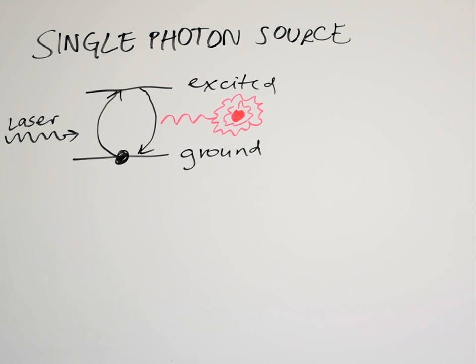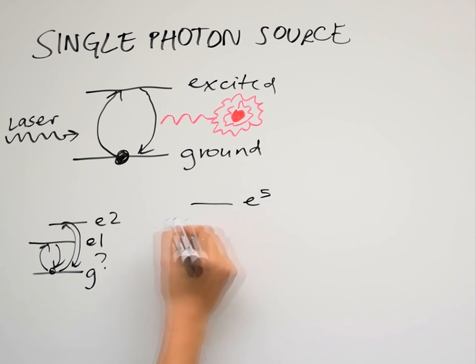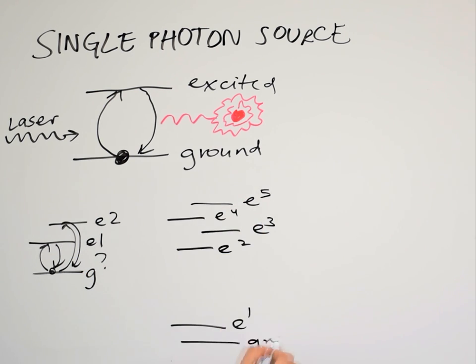But what about more complicated systems? Do they also emit single photons? How are other photons different? Is one more useful than the other in a given application?